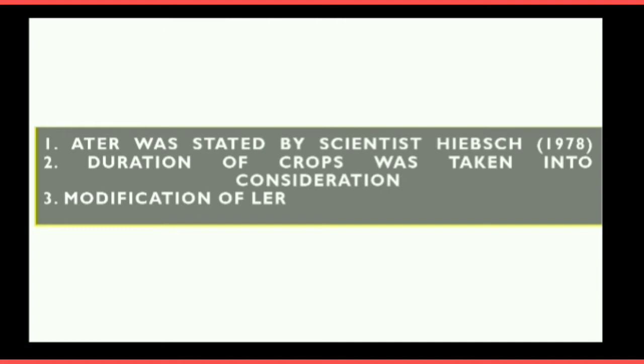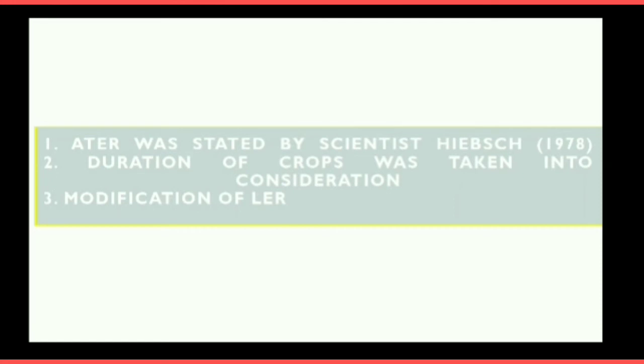The main thing about ATR is that it is a small modification of LER. We will understand the reason why it is a modification of LER and why it was needed. The main thing stated here is that the duration of crops was taken into consideration. In LER and the Relative Total Ratio — covered in my previous videos — the duration of crops is not calculated or implemented. So specifically to consider crop duration, we use the ATR.